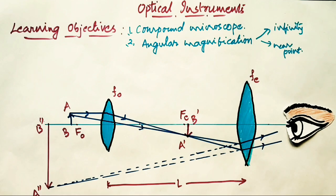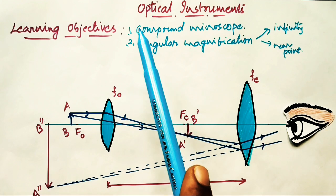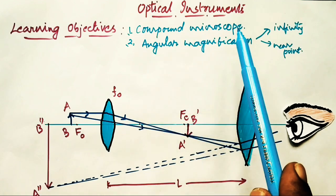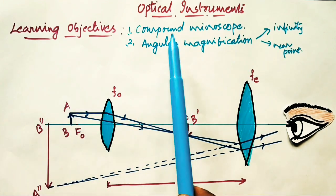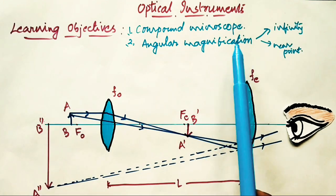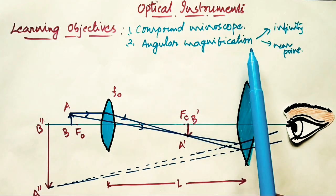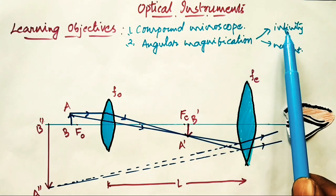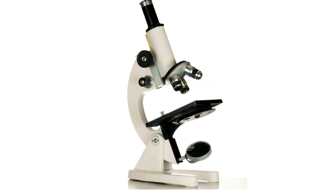Hello everyone. The learning objectives of today's video lesson, which is a part of optical instruments, is the compound microscope. We will also discuss angular magnification produced by a compound microscope when the image is formed at infinity. A simple magnifier can produce only limited magnification; in order to achieve greater magnification, we use a compound microscope.